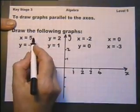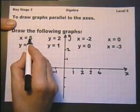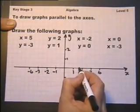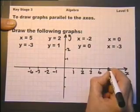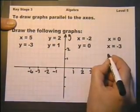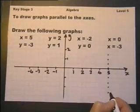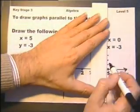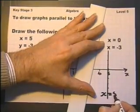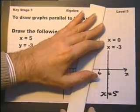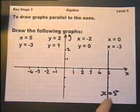Draw the following graphs. X equals 5. Here's the x-axis and here is x equals 5. So, any coordinate along this line will have an x value of 5. So, we call that the graph of x equals 5. Whenever you draw a graph, always label it.